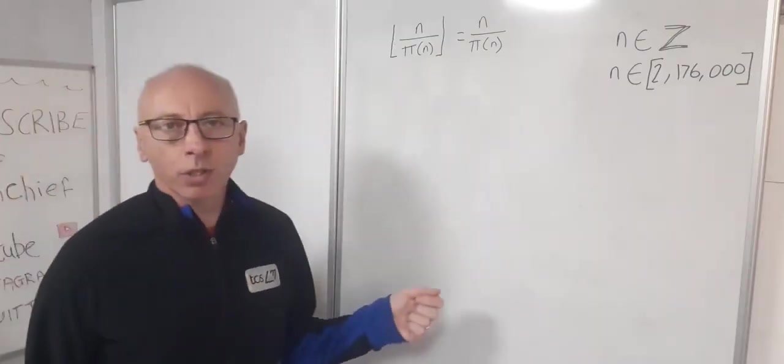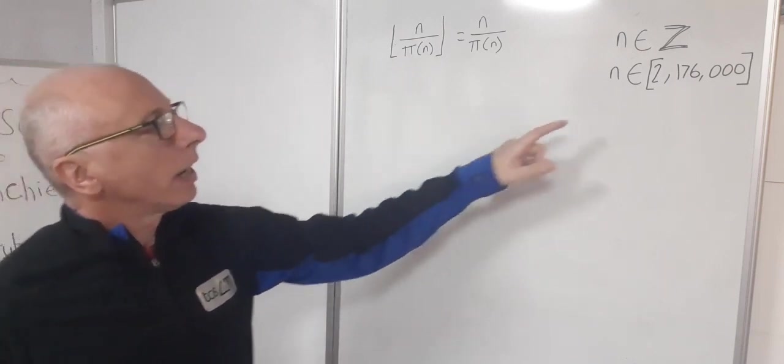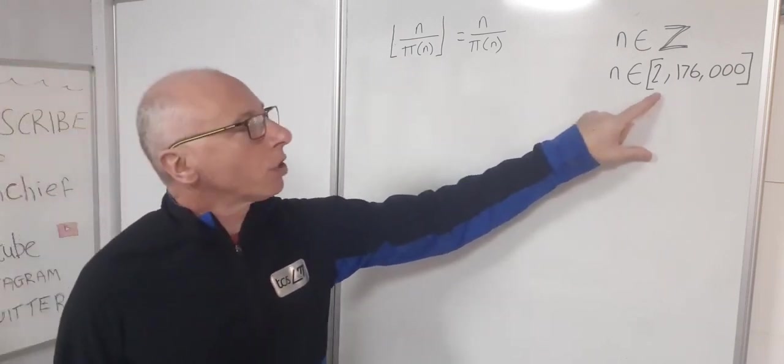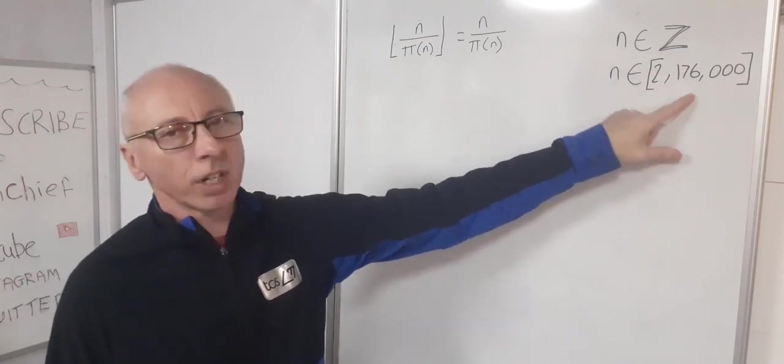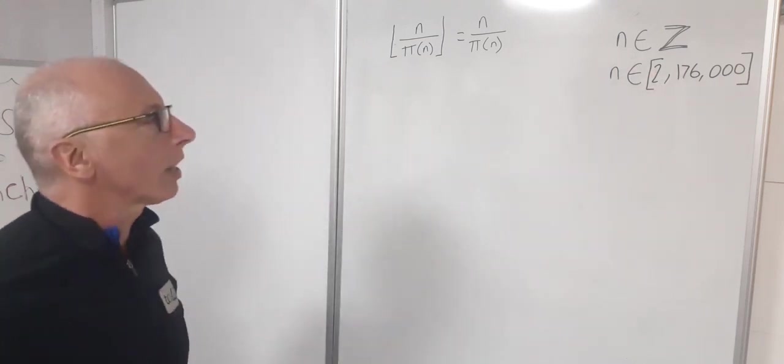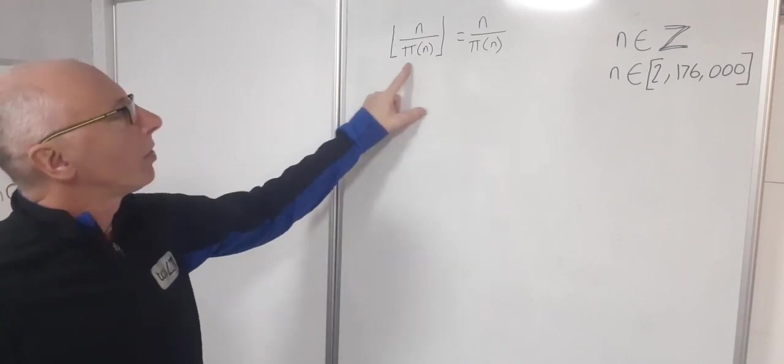So in this video we're going to look at the distribution of prime numbers and I've gone for the range from 2 to 176,000 inclusive where n is an integer so we're only looking at integers or natural numbers with this function.